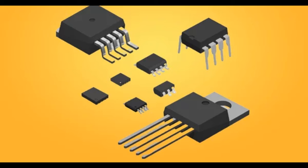It's important to note that while MOSFETs can be used for amplification, other types of transistors like bipolar junction transistors, BJTs, are also commonly used for amplification purposes. The choice between MOSFETs and other amplification devices depends on the specific requirements of the application and the characteristics of the devices involved.